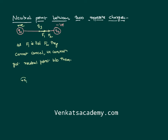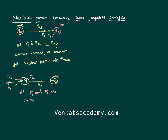Let us check if it is possible to get a neutral point beyond the charges. Assume q1 is a positive charge and q2 is a negative charge. I place a test charge q3 somewhere outside, where the distance between q3 and q1 is x, and the separation between the two charges is d. On q3, the positive charge q1 exerts a repulsive force, and the negative charge q2 exerts an attractive force — these two forces are in opposite directions.